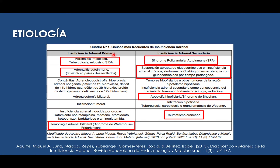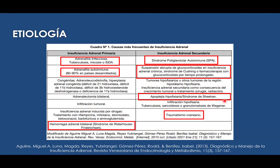Dentro de las causas de insuficiencia adrenal primaria tenemos la tuberculosis, el VIH, la diabetes autoinmune en el 80-90% de pacientes, y otras causas. Un punto importante es el síndrome de Waterhouse-Friderichsen, producido por una hemorragia adrenal bilateral causada principalmente por el meningococo. Dentro de las insuficiencias suprarrenales secundarias tenemos el síndrome poliglandular, la supresión abrupta de corticoides, el síndrome de Sheehan — producido por un sangrado en la paciente puérpera como causa principal por atonía uterina — y el traumatismo craneoencefálico.